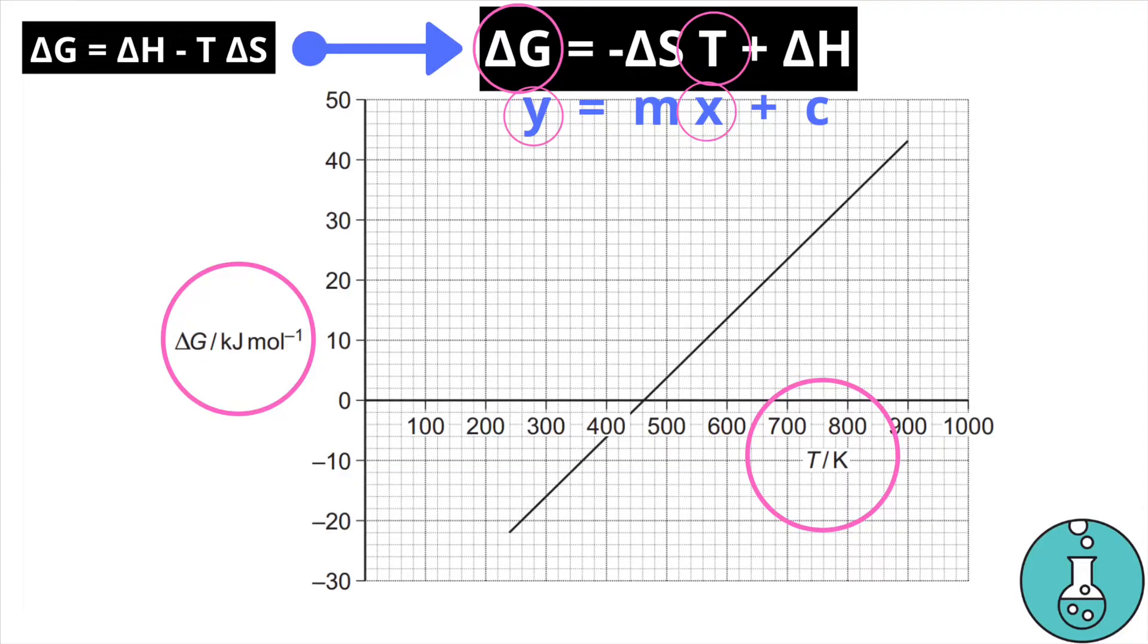First off at the top of the page you can see my rearrangement of the delta G calculation that I've done to mirror the y equals mx plus c equation. What I've circled up for you are the y and x axis of delta G and temperature with units of kilojoules per mole and kelvin respectively, so then you can see if they ask you to plot a graph for this or if they ask you to describe what you could do to calculate delta S using a graph you would then be able to say exactly what the axis would be right at the very start.